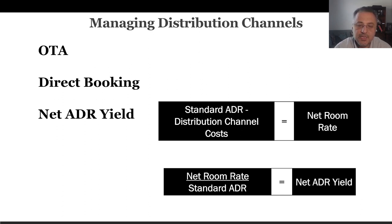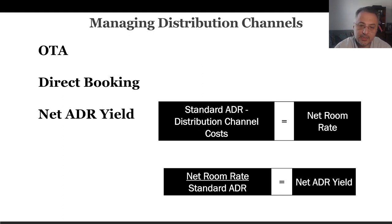First, we need the net room rate — meaning how much we get after the distribution channel cost. In the second step, we divide the net room rate by our regular rate, and it gives us the net ADR yield.